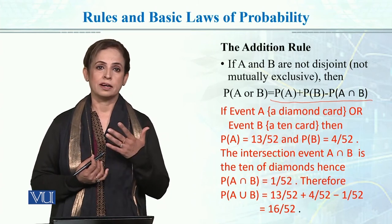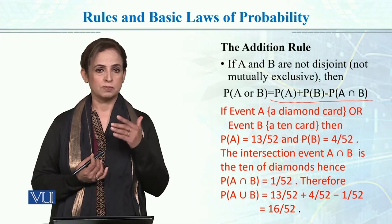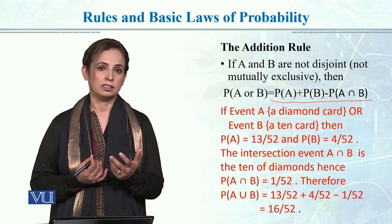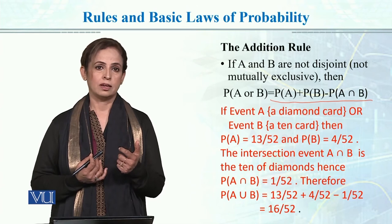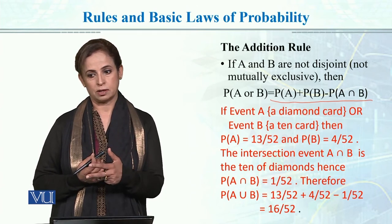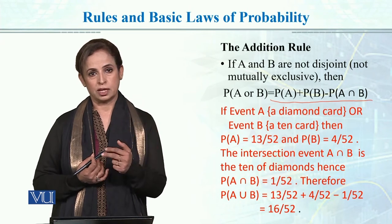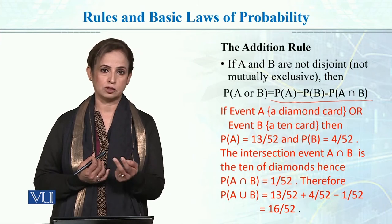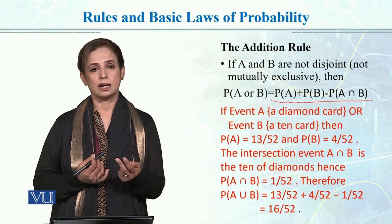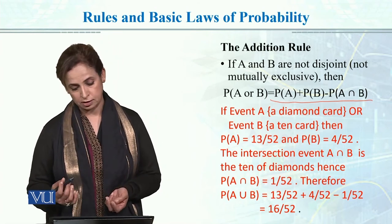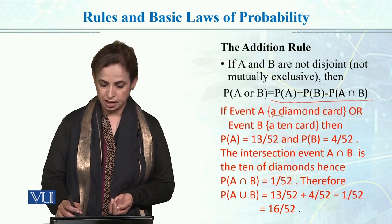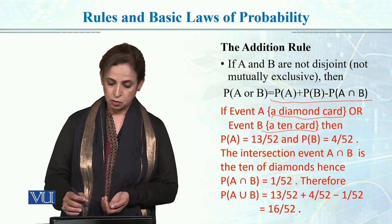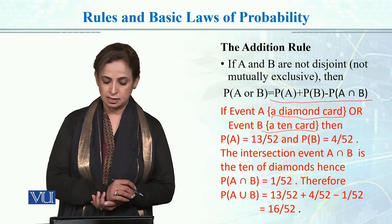A standard deck of cards has 52 cards and 4 suits: club, spade, diamond, and hearts. Hearts and diamonds are red, and clubs and spades are black. Each suit has 10 number cards and 3 picture cards, giving 12 picture cards in total. Now, event A is drawing a diamond card, and event B is drawing a 10 card. These two events are not mutually exclusive, because the 10 of diamonds satisfies both events simultaneously.